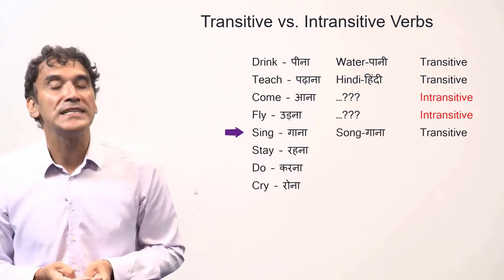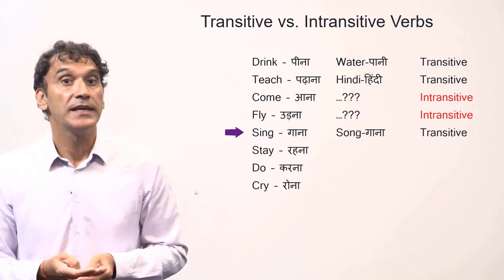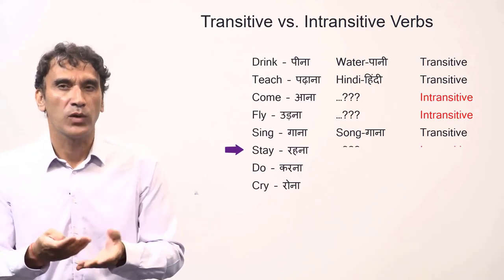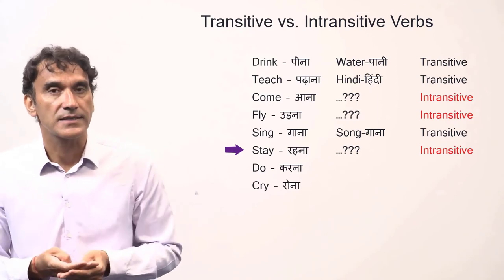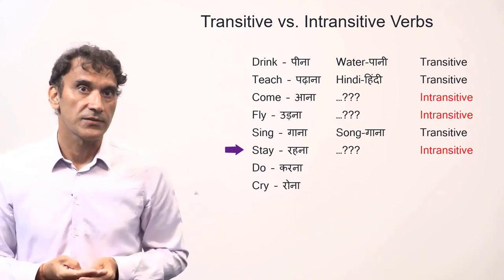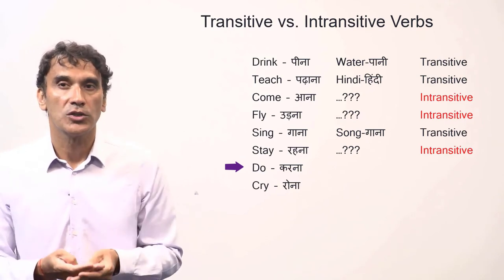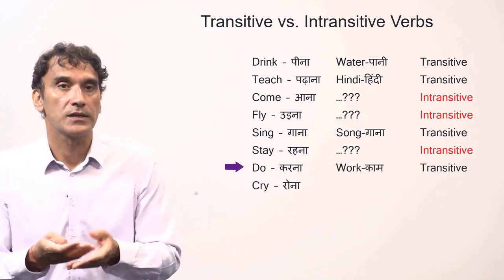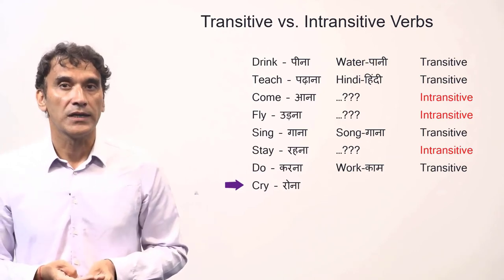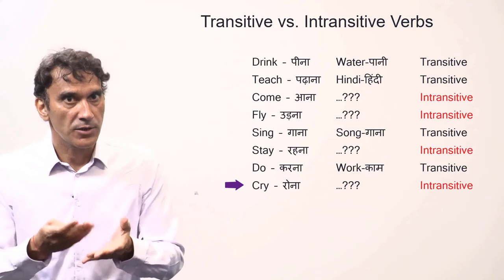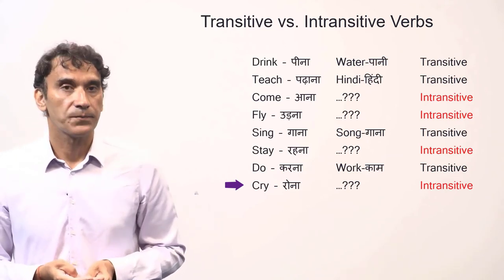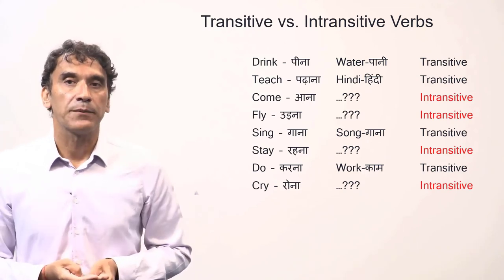'Sing' (gaana) — to sing a song, to sing a poem. The verb can have a direct object, so it is transitive. 'Stay' (rehna) — 'stay what?' does not make sense, so it is intransitive. 'Do' (karna) — 'do what?' To do a job, to do work — it is a transitive verb. 'Cry' (rona) — 'cry what?' does not make sense, so it is intransitive.